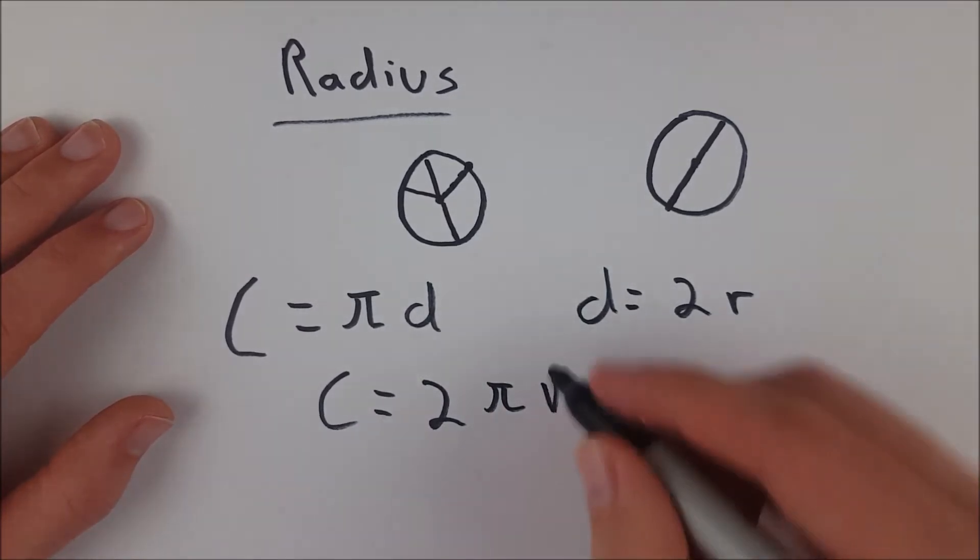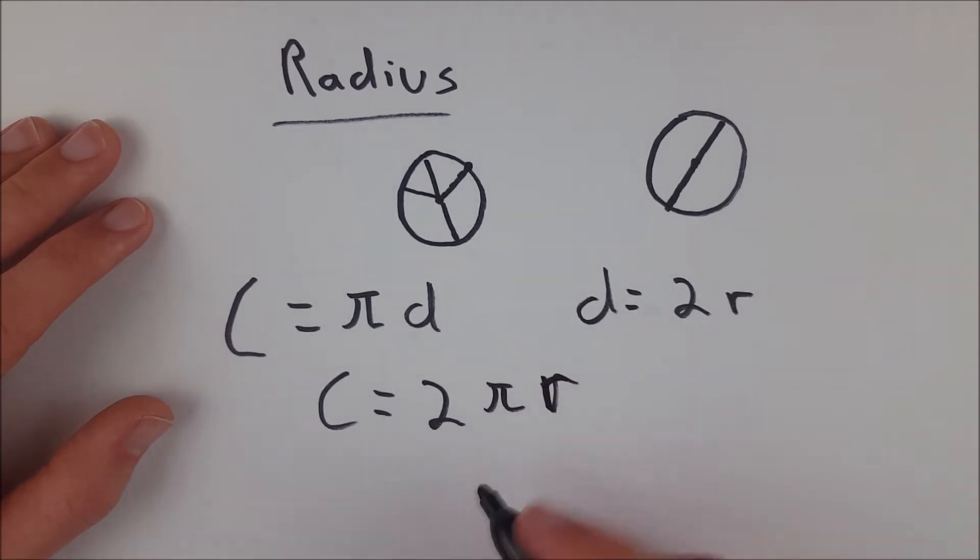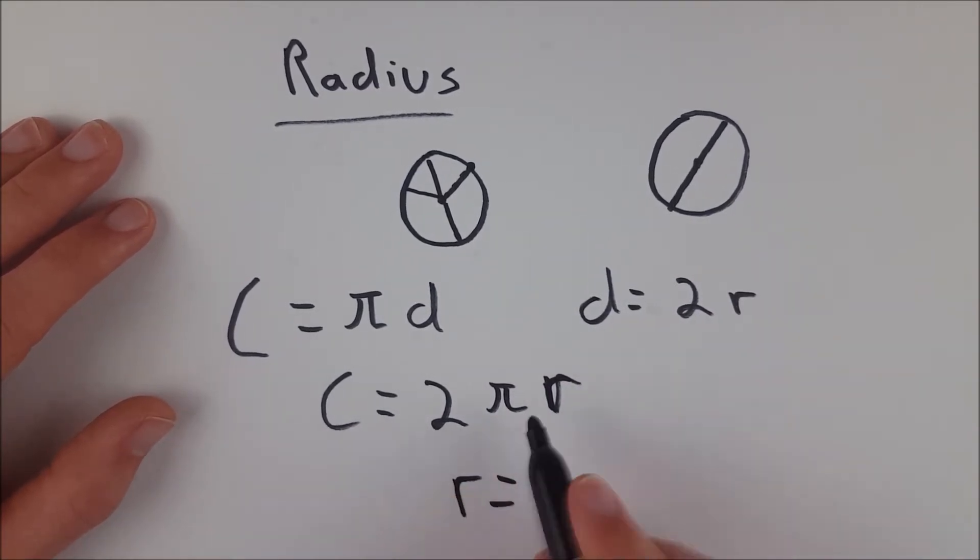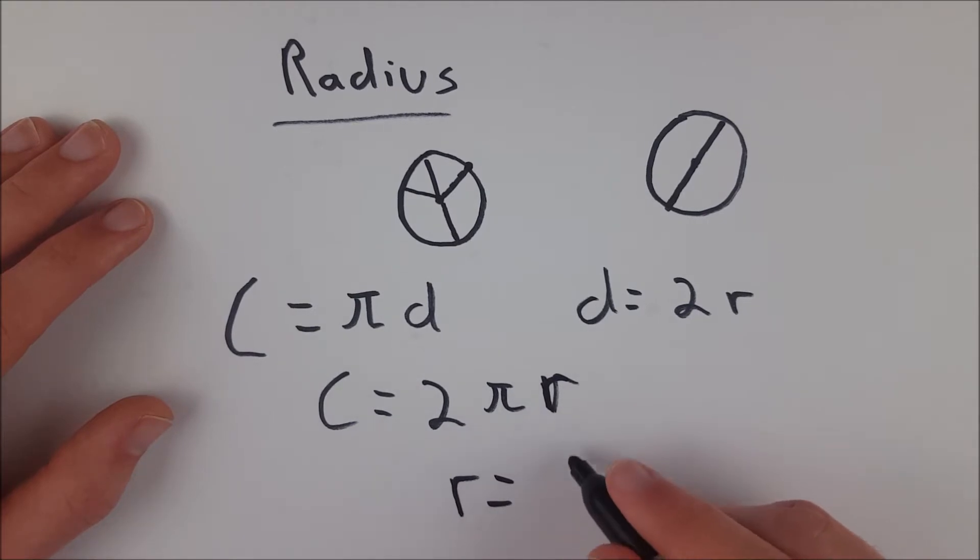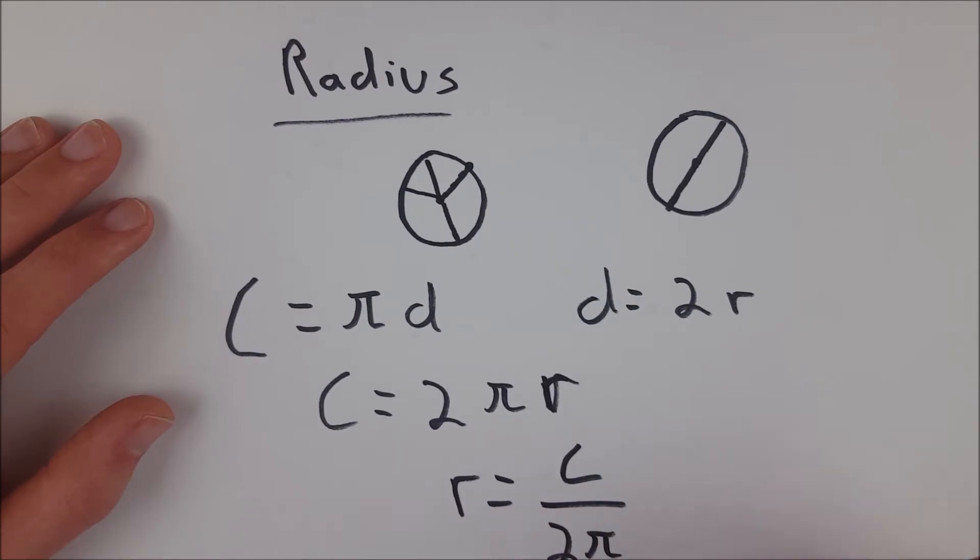And then using this, that's a bad r, we get our radius formula. The radius, divide both sides by 2π, the radius is equal to the circumference of the circle divided by 2π.